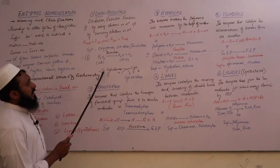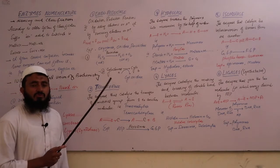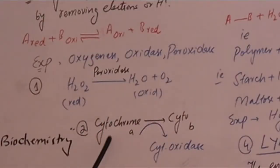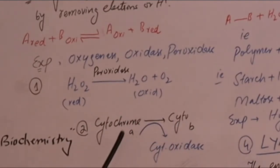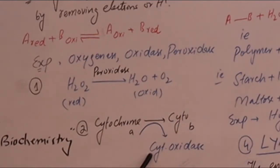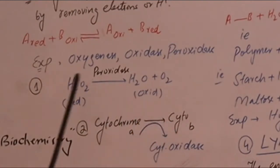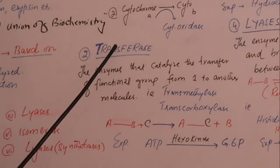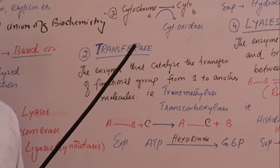Another example: cytochromes are pigments found in leaves. In the electron transport chain, cytochrome a and cytochrome b pass electrons between them. Cytochrome oxidase is the enzyme that facilitates electron transfer from one cytochrome to another, completing an oxidation-reduction reaction.